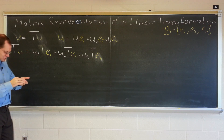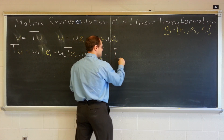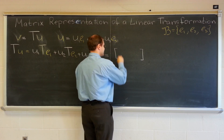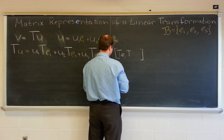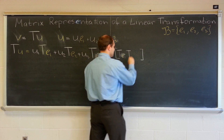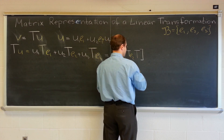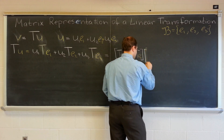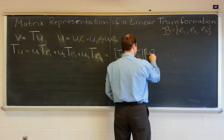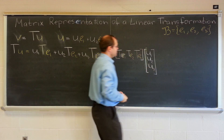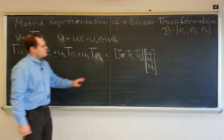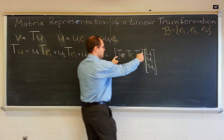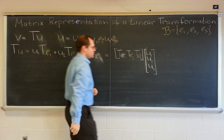Now let's start pushing this towards matrix form. We can write this as a 1×3 matrix consisting of T(E1), T(E2), T(E3), multiplying the 3×1 matrix of U1, U2, U3. If you multiply according to matrix formalism, it would be U1·T(E1) + U2·T(E2) + U3·T(E3) — exactly what we have.